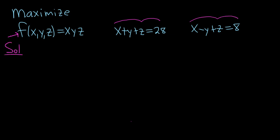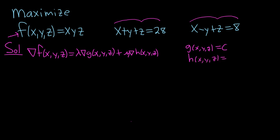To use Lagrange multipliers, whenever you have two constraints, all you do is use the following formula. We have the gradient of f, and that should be equal to lambda times the gradient of g plus mu times the gradient of h. So you solve this equation along with your two constraints.